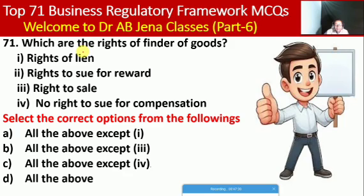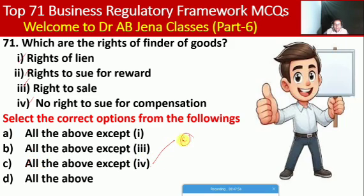Next MCQ: what are the rights of a finder of goods? Options include: right of lien, right to sale for reward, right to sell, and no right to sale for conversion. Select the correct option: all except first, all except three, all except four, or all of the above. Here C is the right option — all except four (no right to sale for conversion is not a right of the finder of goods).